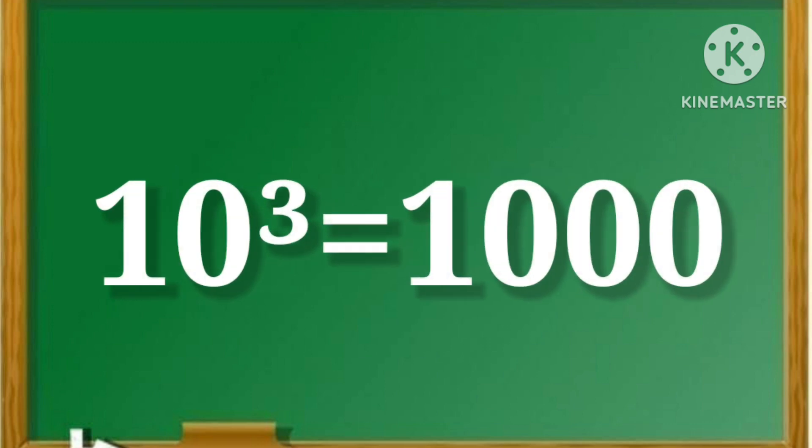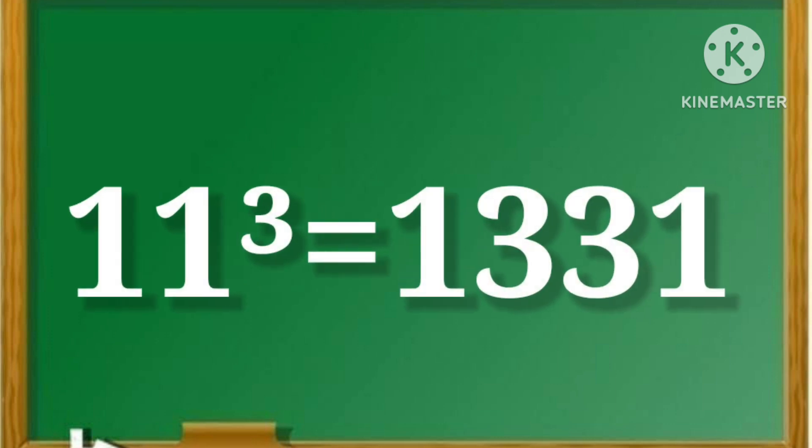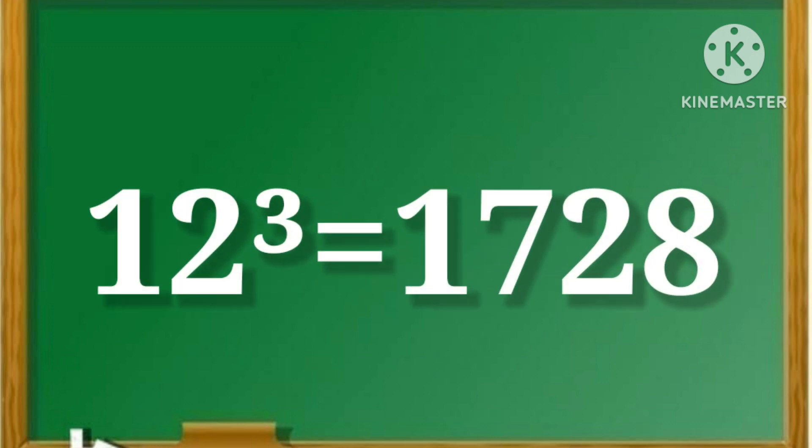10 cube is equal to 1000. 11 cube is equal to 1331. 12 cube is equal to 1728.